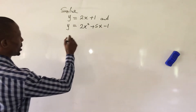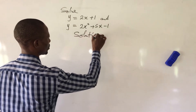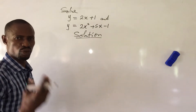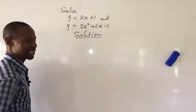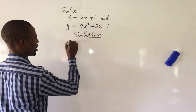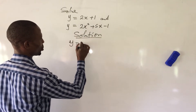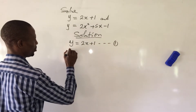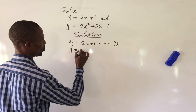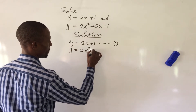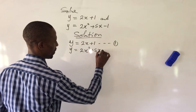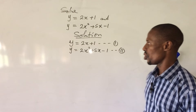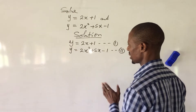Let's go. We take the first one as equation 1 and the second one as equation 2. So y equal to 2x plus 1 is equation 1, and y equal to 2x squared plus 5x minus 1 is equation 2. Let's take a look at this separately.